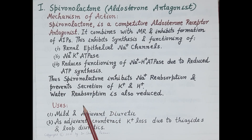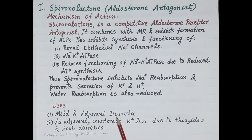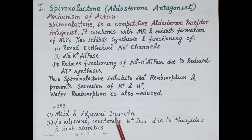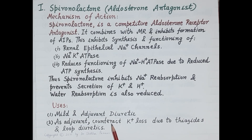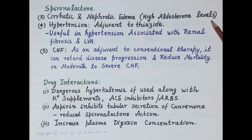Spironolactone is a mild diuretic used as an add-on diuretic along with other diuretics. It is not a potent diuretic because nearly 90 percent of the glomerular filtrate is already reabsorbed before the filtrate reaches the late distal convoluted tubule and collecting duct. Potassium sparing diuretics are mainly used as adjuvants along with thiazides and loop diuretics, as they prevent loss of potassium in the urine.